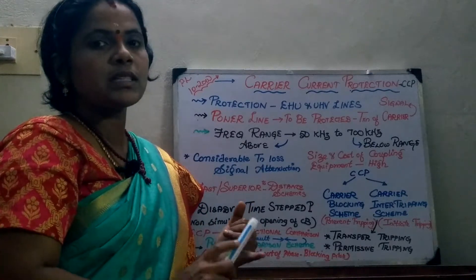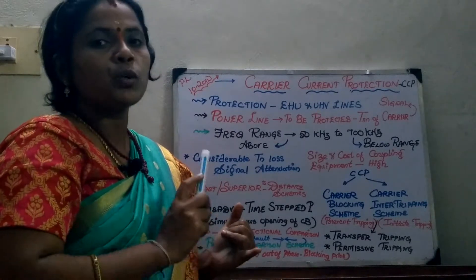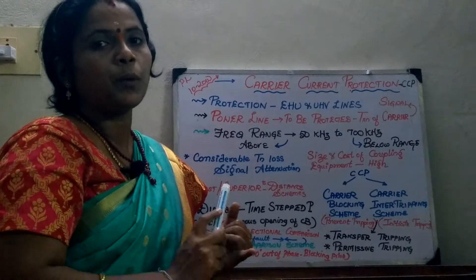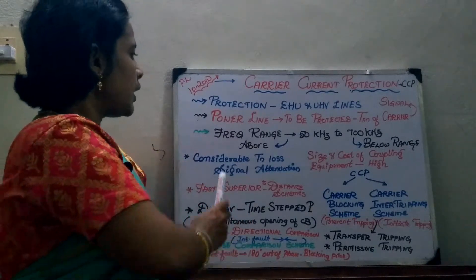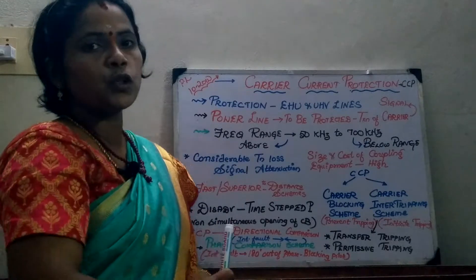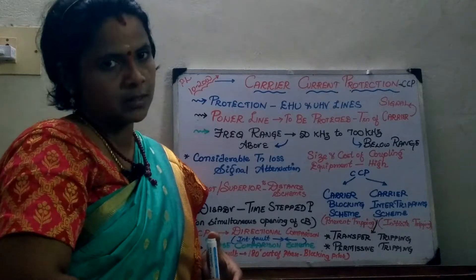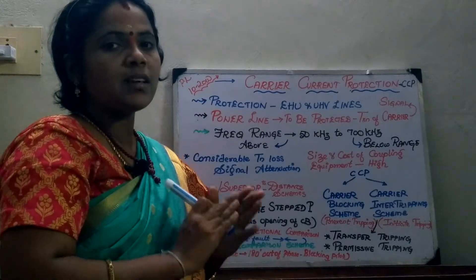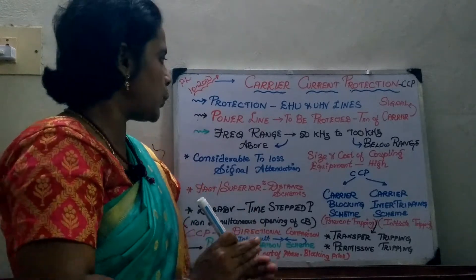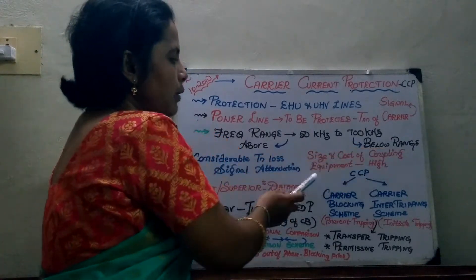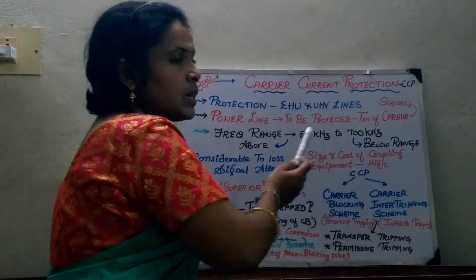We are going to use the same high voltage line as a means to send the carrier signal for protecting the power system components. The frequency range which is used is from 50 kilohertz to 700 kilohertz. The reason we choose this range is that below this range the size and the cost of the coupling equipment becomes high.